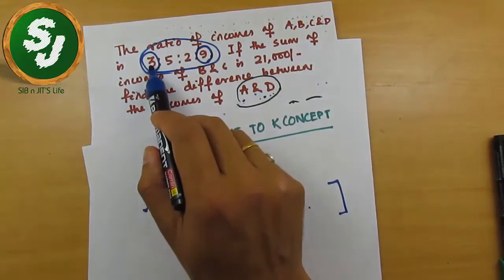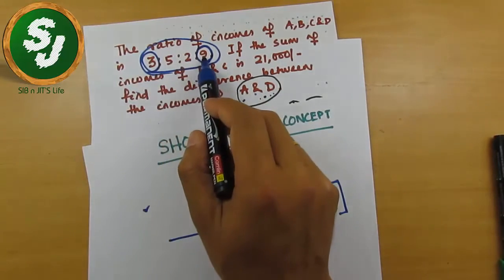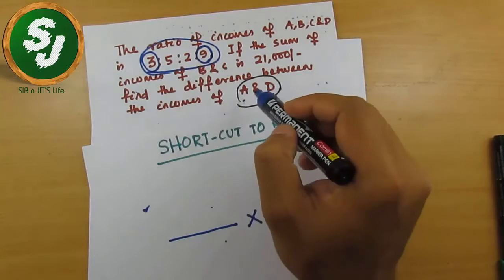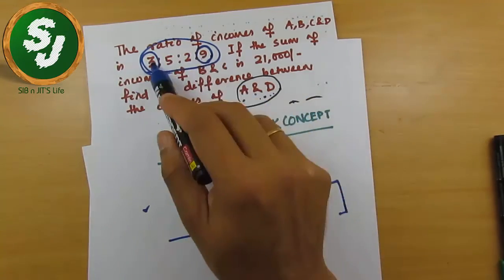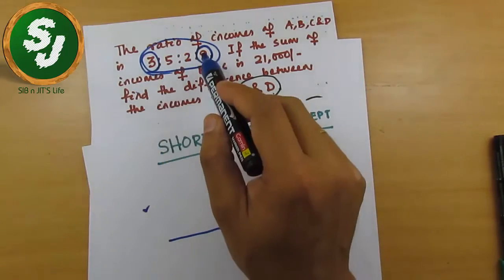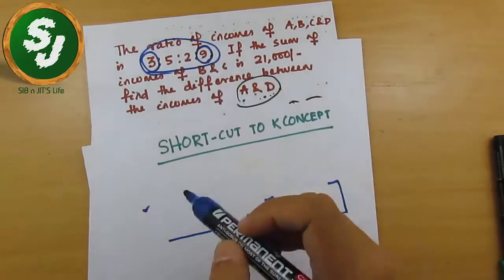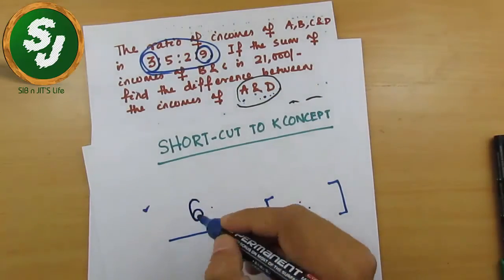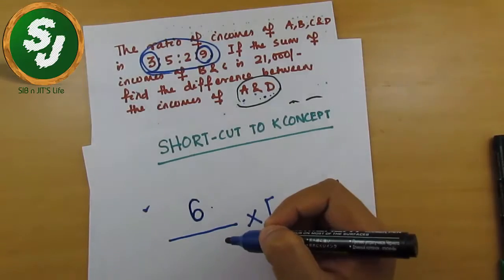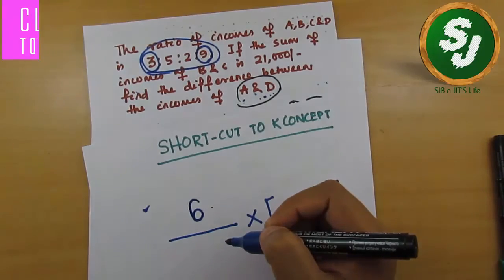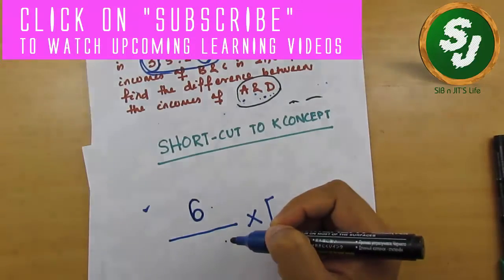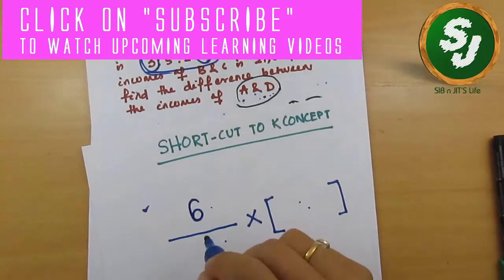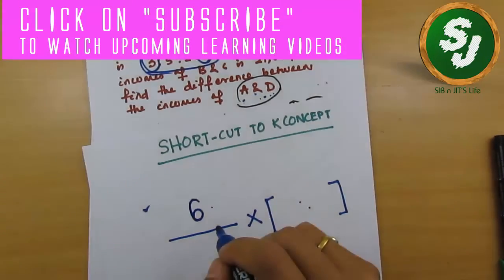Go and have a look at the ratio and find what is asked. The question is asking to find the difference between A and D, so you will write the difference of A and D in the ratio — that is 9 minus 3, which is 6. So the numerator part is for writing what is asked in the question — its ratio value.